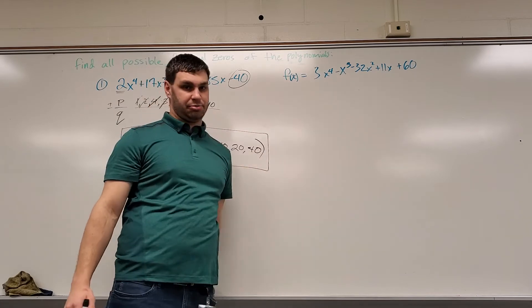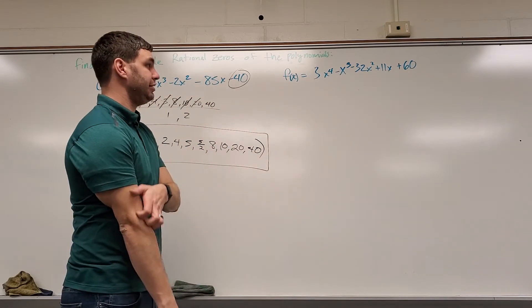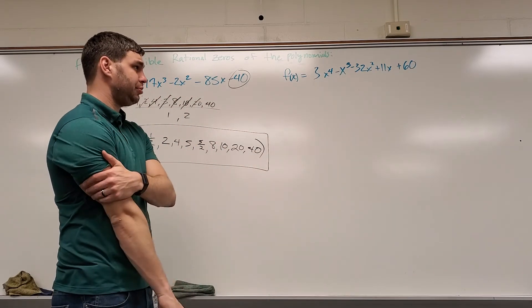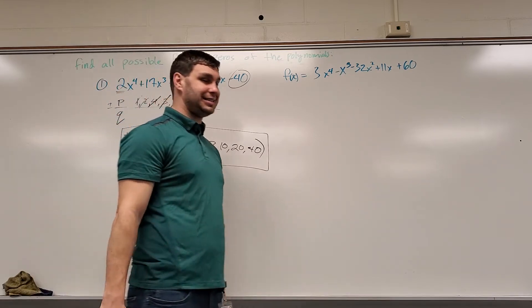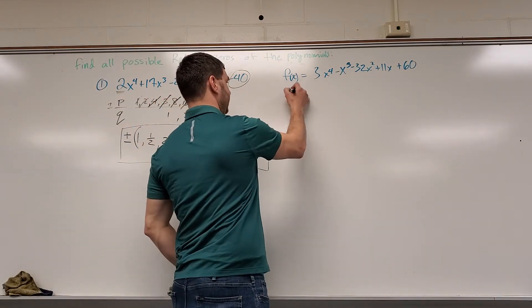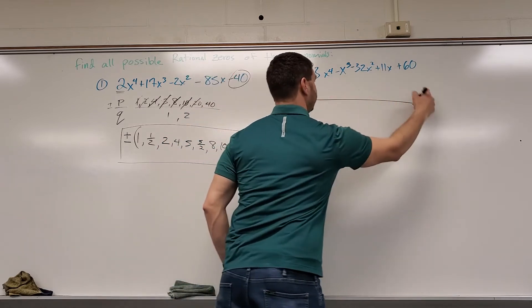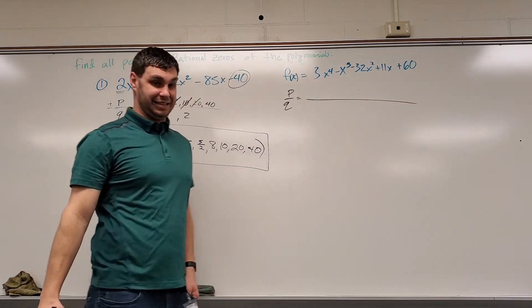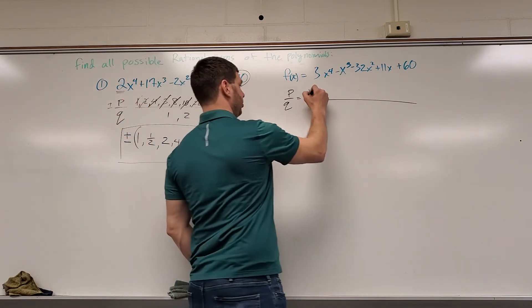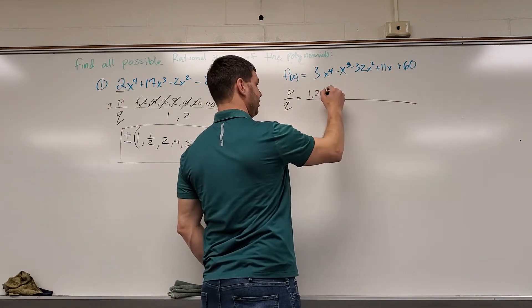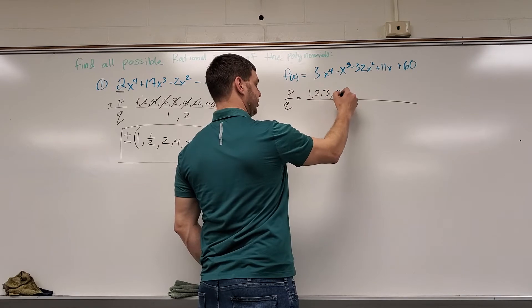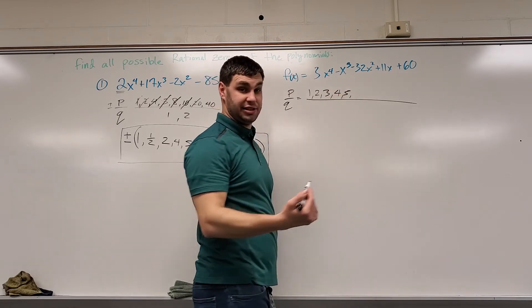What about f of x equals this polynomial? 3x to the 4th minus x to the 3rd minus 32x squared plus 11x plus 60. Same idea. First off, my p's are going to be p over q. These will be all the factors of 60. 60 is 1, 2, 3 does go into 60. So does 4, 5. 60 has a lot of them.